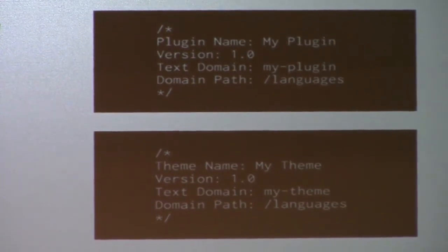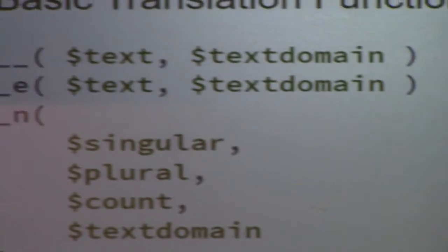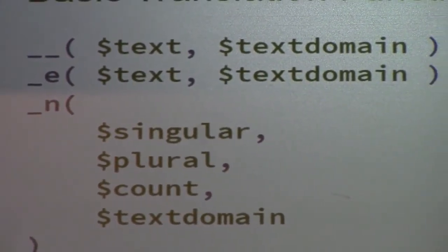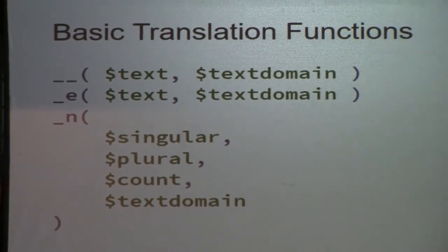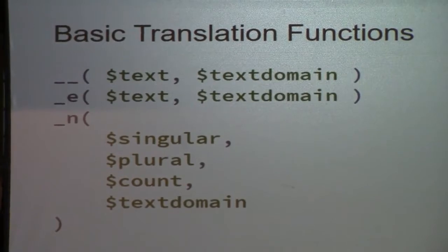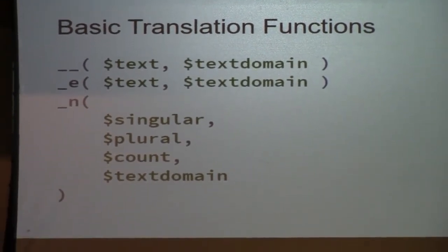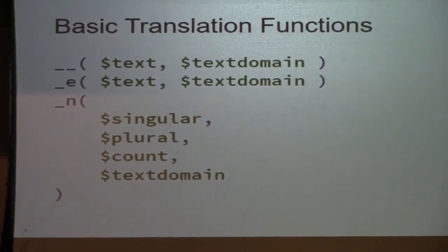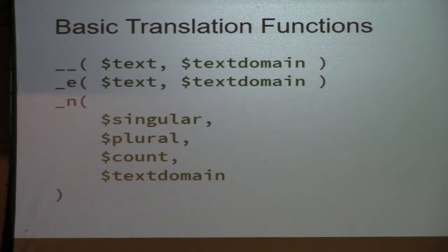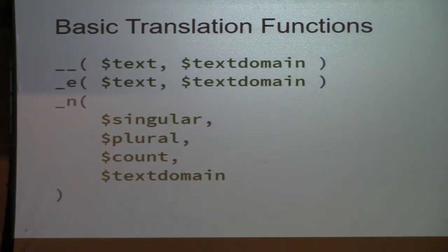Now you need a couple of basic translation functions. The three bread-and-butter translation functions are double underscore (__), underscore-E (_e), and underscore-N (_n). For the first two, you give it the text you want to translate and your text domain. That tells WordPress to look in your group of translations for that text and, if you're using another language, return that translation. If it can't find a translation, it'll just return the text you put in. Double underscore returns the value; underscore-E echoes it directly.